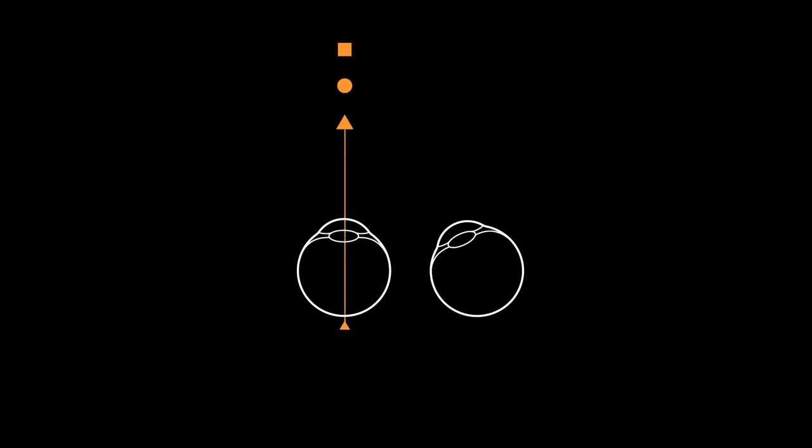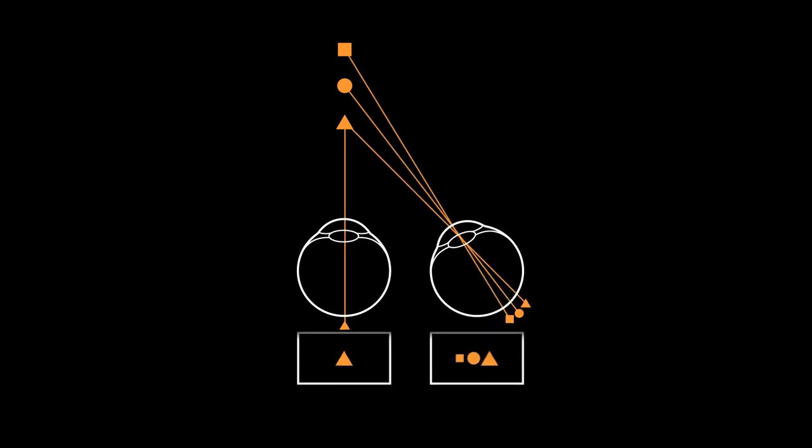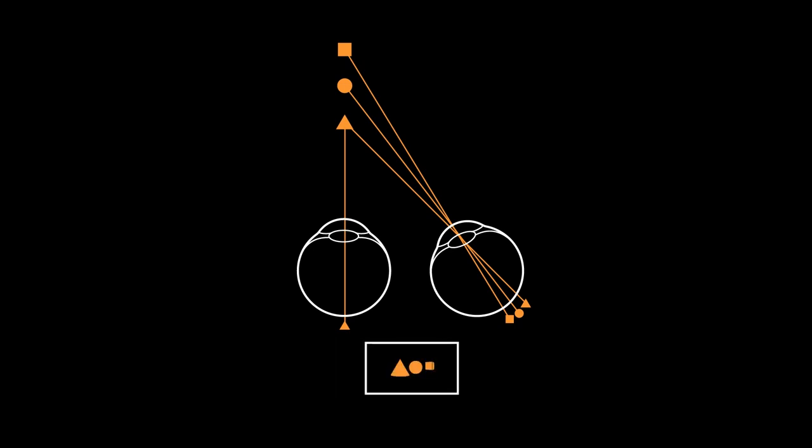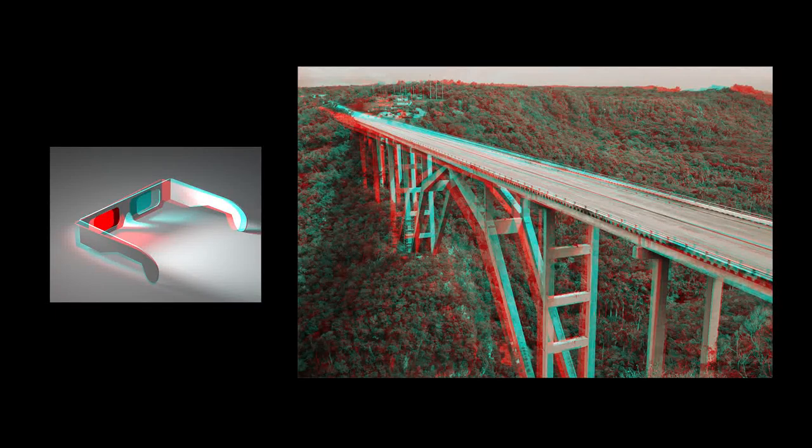Stereopsis is probably our most dominant depth cue. Basically, we have two eyes that see two different images. We superimpose those objects on top of each other and form a three-dimensional image, very similar to how we see 3D movies. The left eye sees objects in one pattern, the right eye sees a different pattern. The brain interpolates these two images, stacks them on top of each other, and creates a three-dimensional image. We've seen this before in 3D movies with anaglyphs, where the right eye and left eye see two different images, and when we put proper glasses on, the two images are imposed on each other.